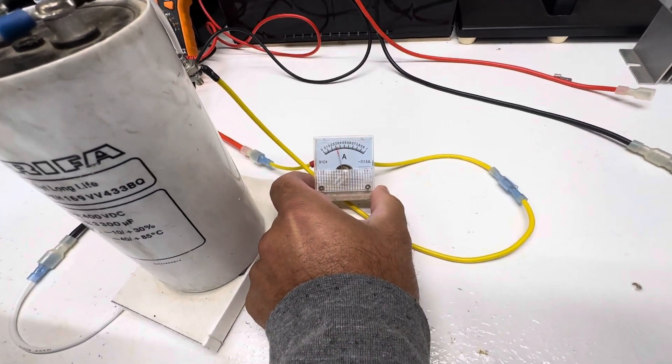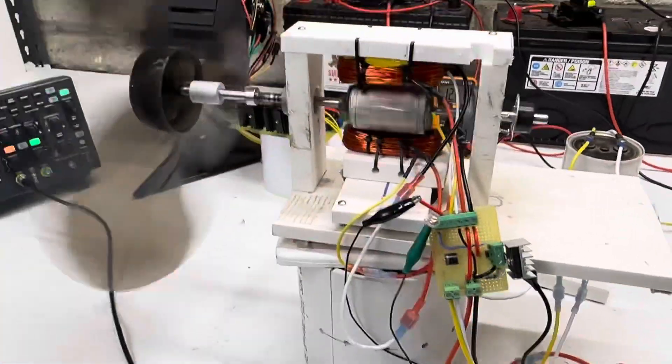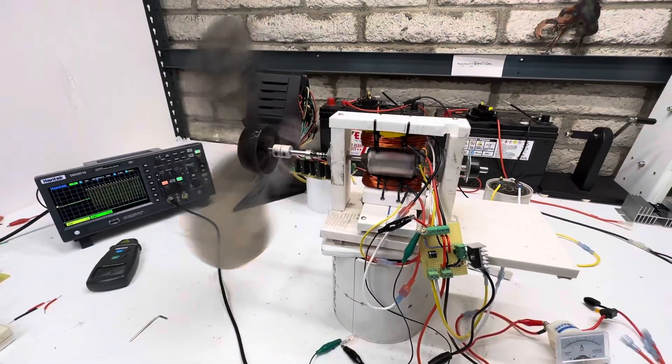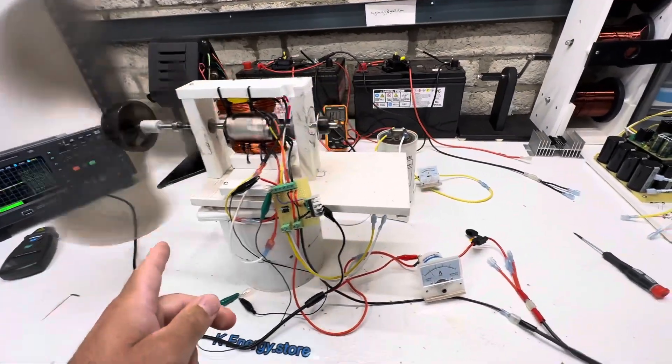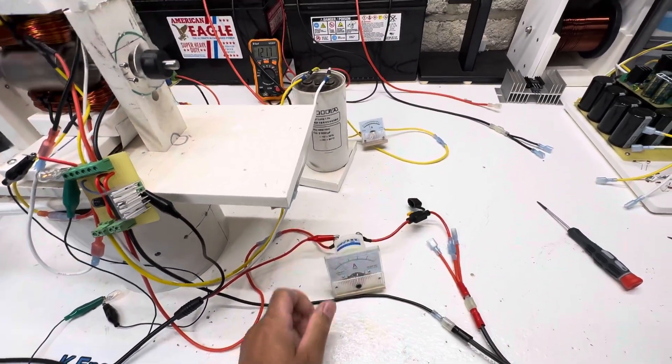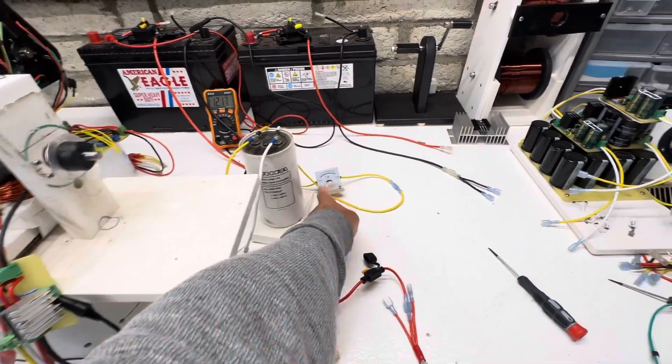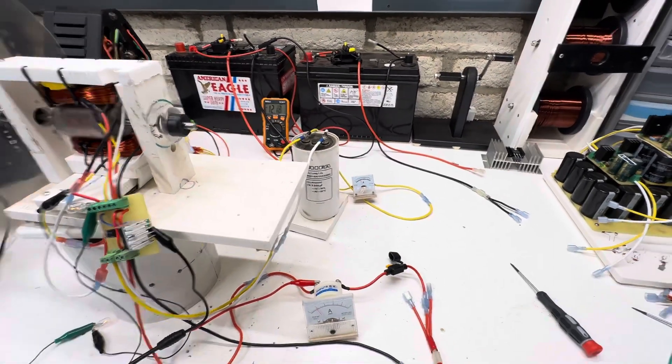Sometimes having a load on these motors is actually beneficial. We're using less power running a load. This is our output - we're using exactly one amp and producing a little over 300 milliamps, so we're basically at 32% return of energy as it's charging the second battery.